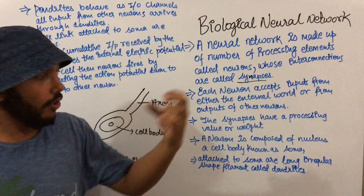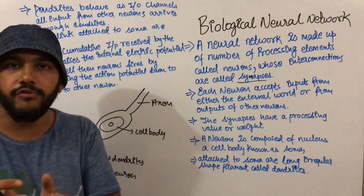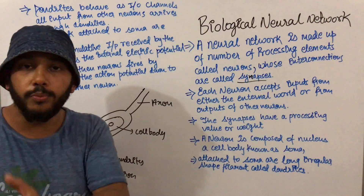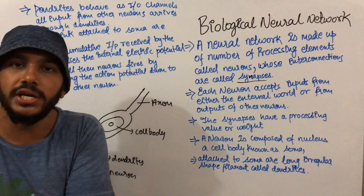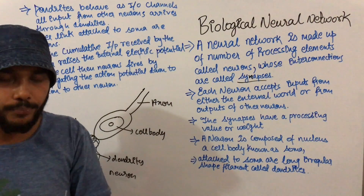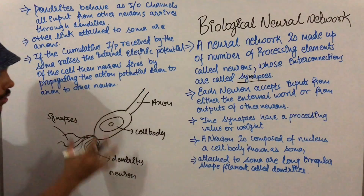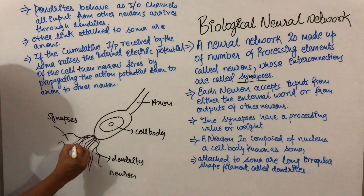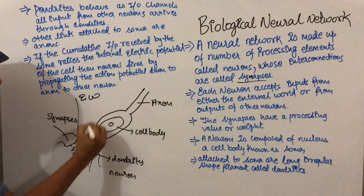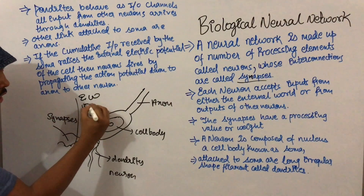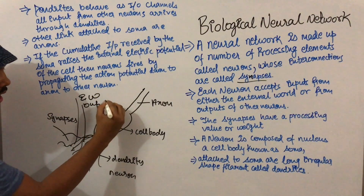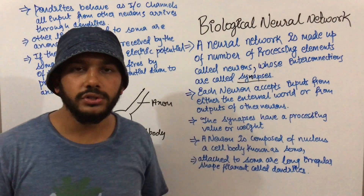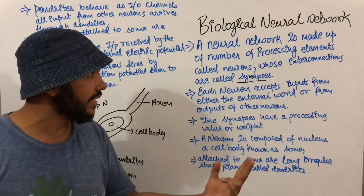Each neuron — the neuron at the fingertip — will calculate from the input and pass the information in the form of output. This output will be presented to other neurons as a form of input. That is, one neuron takes input from two different entities: first from the external world, and second from the output of other neurons.